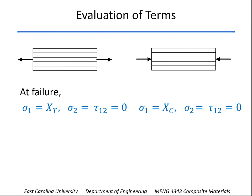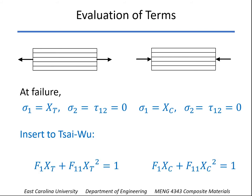When we do the compression test, sigma-1 will equal x sub c, which, as we said earlier, we're going to always use a negative value for the compression strength. The other stresses will be equal to 0. So when we plug those values into the Tsai-Wu criterion, the only non-zero terms are the ones shown here.